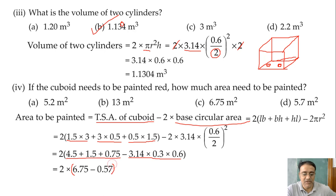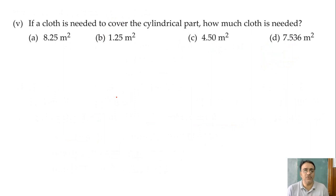So you have to multiply these separately and then subtract, this is in bracket. So finally we will get 12.93 that is approximately equals to 13 meter square. So which option is the correct one? B option. Right. So now we are moving toward the last question: if a cloth is needed to cover the cylindrical part, how much cloth is needed?